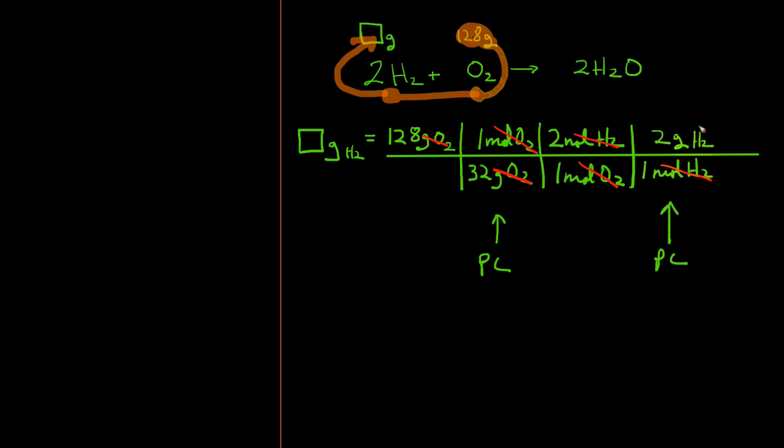Note at this point the unit that I needed to show up has indeed shown up. At this point all I need to do is get my calculator out and multiply out the numbers, and when I do I come up with 16 grams of H₂.